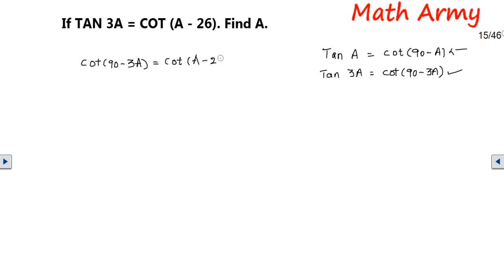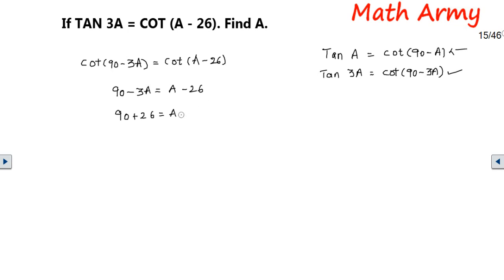Because cot appears on both sides, you can just ignore them and focus on the values in the brackets. Equate: 90 - 3a = a - 26. Move -26 to the left side — it becomes +26, giving 90 + 26. Move -3a to the right side — it becomes +3a, so a + 3a gives 4a.